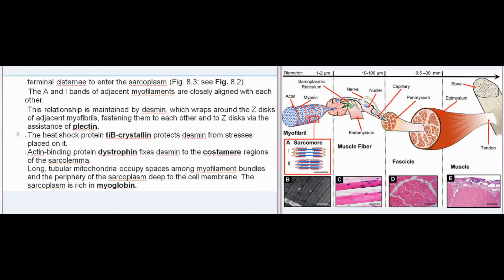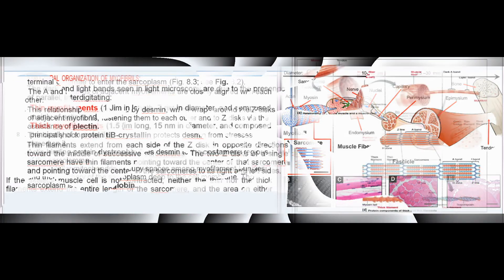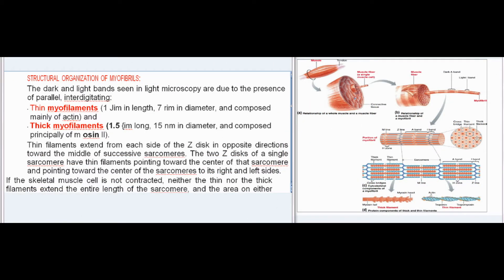Actin-binding protein dystrophin fixes desmin to the costamere regions of the sarcolemma. Long tubular mitochondria occupy spaces among myofilament bundles and the periphery of the sarcoplasm deep to the cell membrane. The sarcoplasm is rich in myoglobin. The dark and light bands seen in light microscopy are due to the presence of parallel, interdigitating thin myofilaments — 1 μm in length, 7 nm in diameter, composed mainly of actin — and thick myofilaments — 1.5 μm long, 15 nanometers in diameter, composed principally of myosin-2.